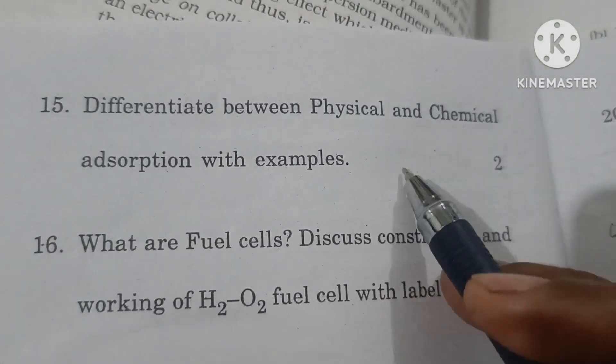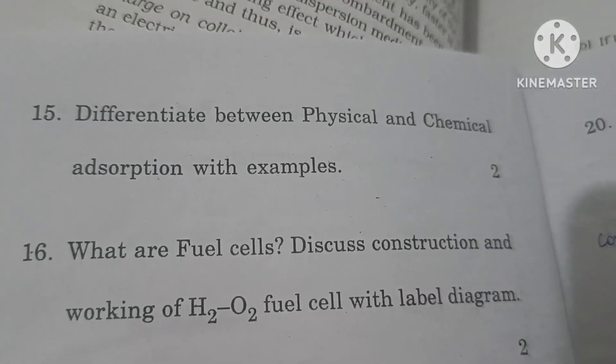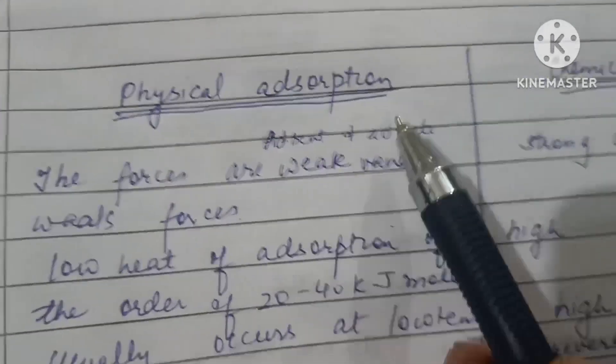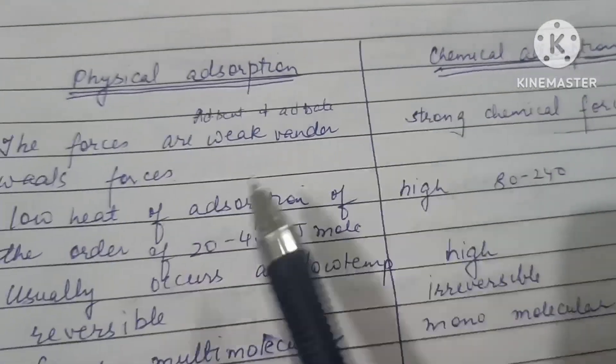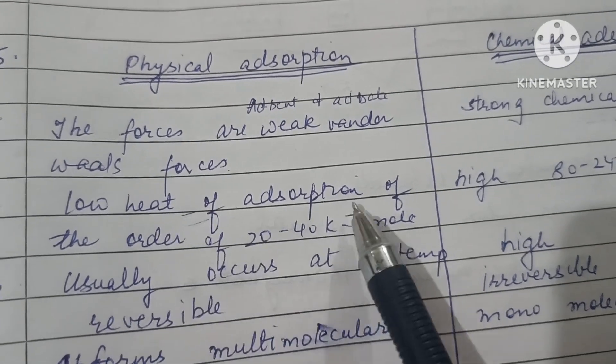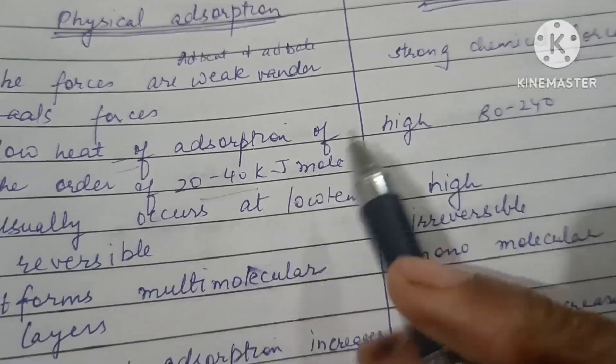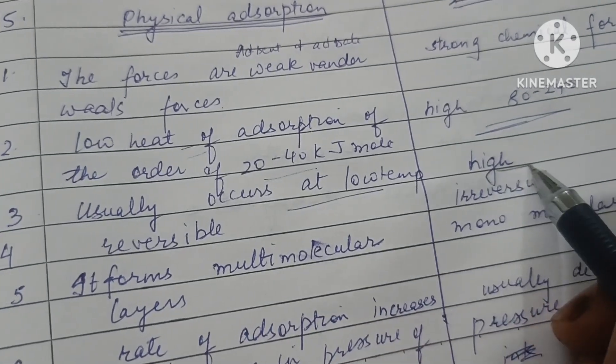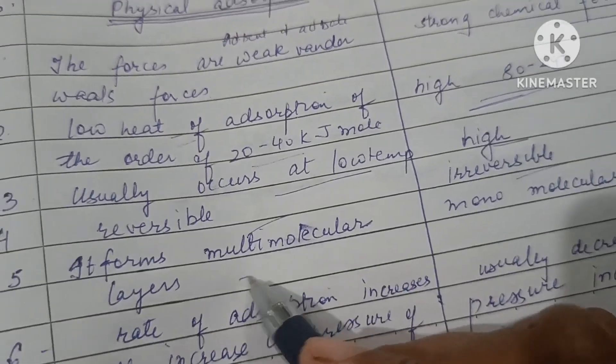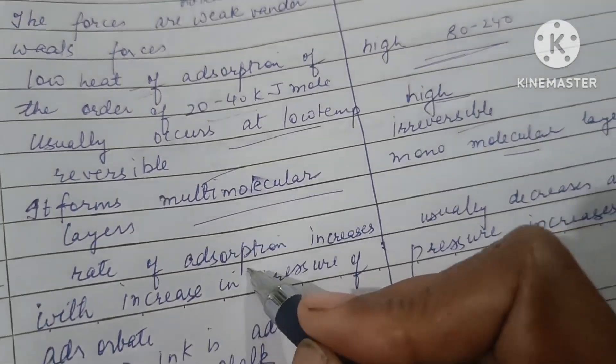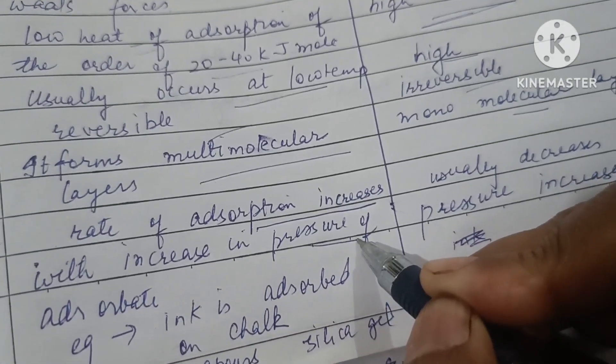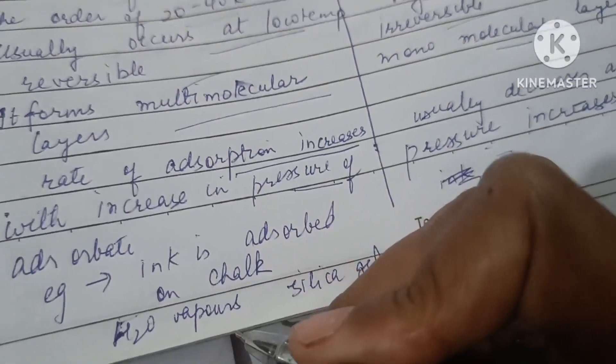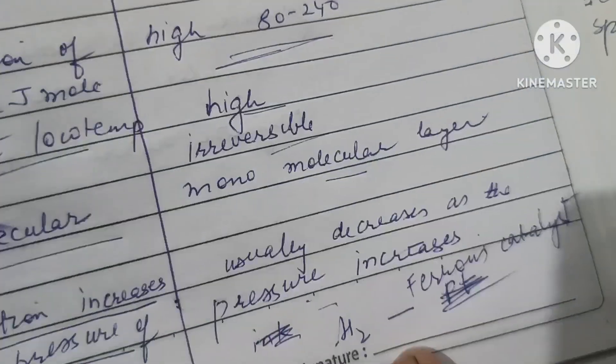Differentiate between physical and chemical adsorption with examples. In physical adsorption, forces between adsorbent and adsorbate are weak van der Waals forces, whereas in chemical adsorption they are strong chemical forces. Physical adsorption has low heat of adsorption, 20 to 40 kJ/mol, whereas chemical has high heat, 80 to 240 kJ/mol. It occurs at low temperature versus high temperature. It is reversible versus irreversible. It forms multi-molecular layers versus mono-molecular layers. Rate increases with pressure in physical adsorption.